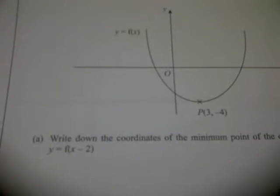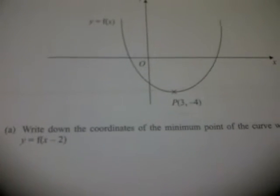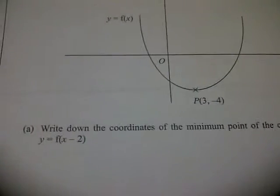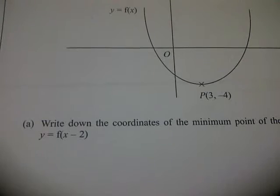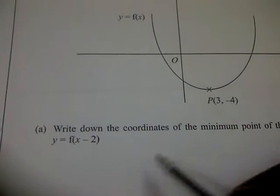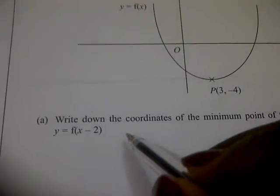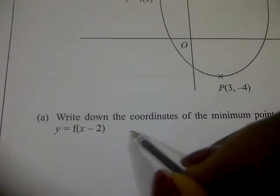Then they said write down the coordinates of the minimum point of the curve with the equation y equal to f(x minus 2). Now, from this, they gave you y equal to f(x minus 2).